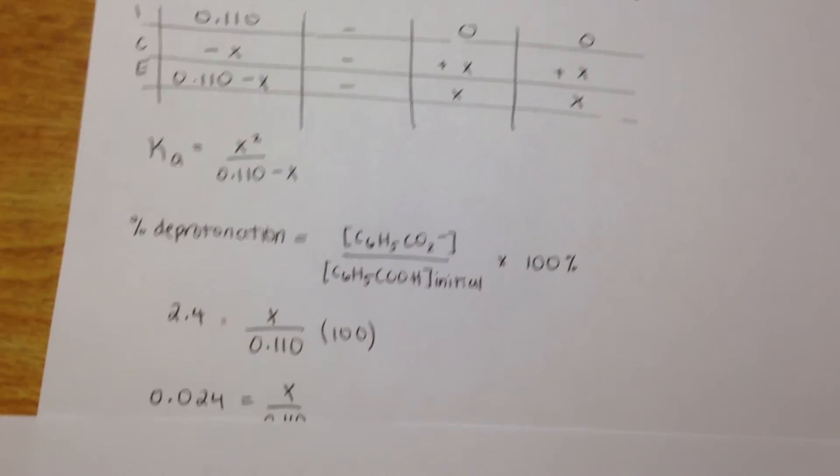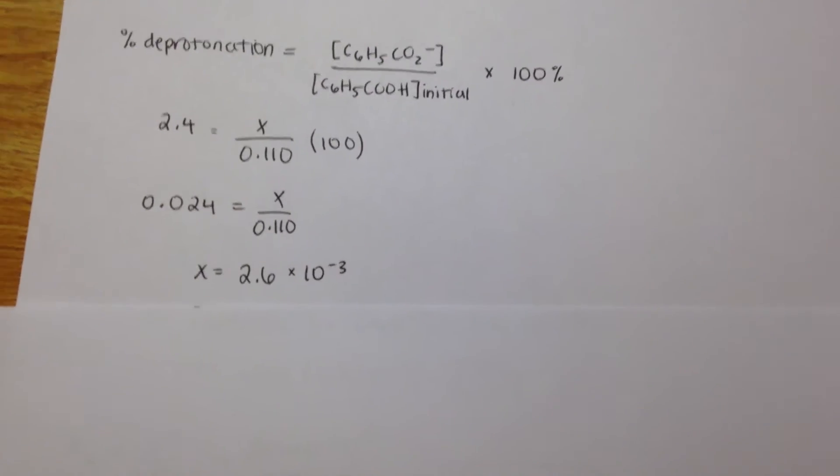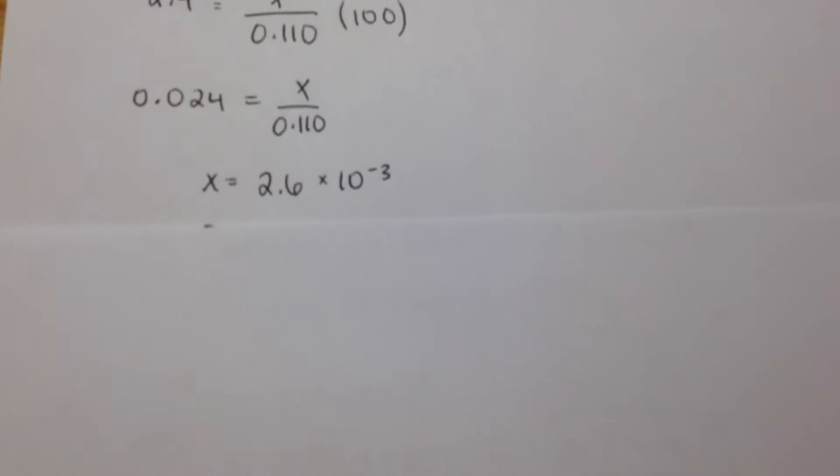And then times 100, so we divide by 100, multiply, we get x equals 2.6 times 10 to the negative third.